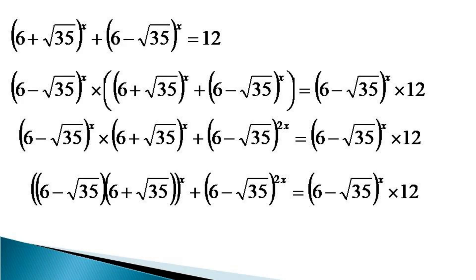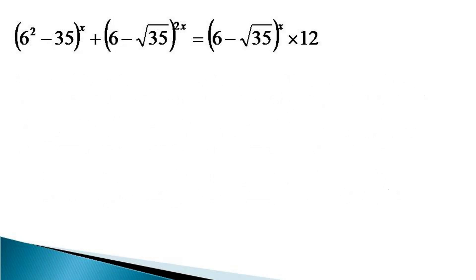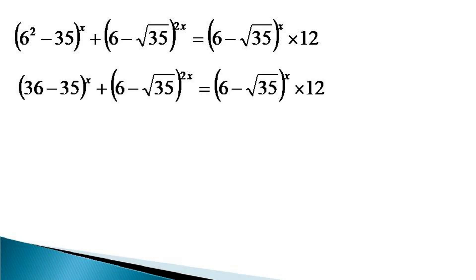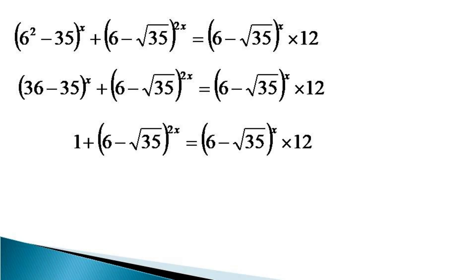After the multiplication in the first term, the equation becomes (6² minus 35)^x plus (6 minus √35)^(2x) equals (6 minus √35)^x times 12. In this equation, 6² becomes 36, so it becomes (36 minus 35)^x, which is 1^x = 1. The equation becomes 1 plus (6 minus √35)^(2x) equals (6 minus √35)^x times 12.